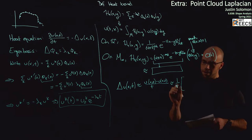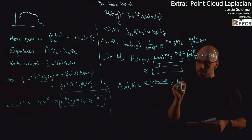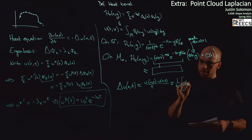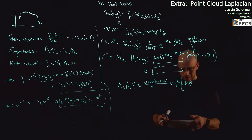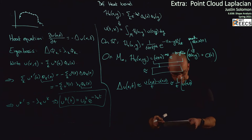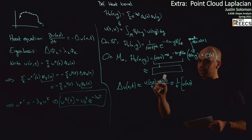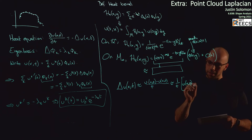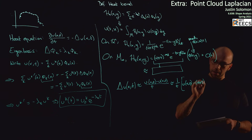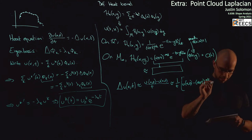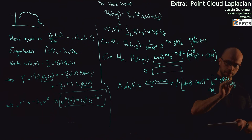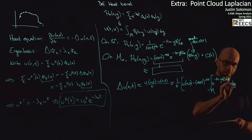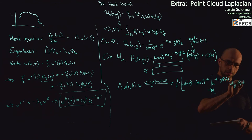Let's fill in our approximation. We have a 1/t factor, then u(x, 0), minus the solution to the heat equation — but that's just the integral against the heat kernel. So roughly that's minus (4πt)^(-m/2) times the integral over our domain of e to the minus norm of x minus y squared over 4t times u(y, 0) dy.